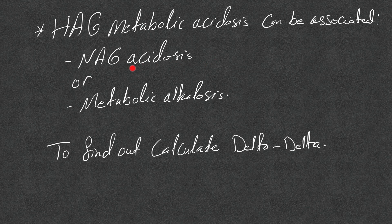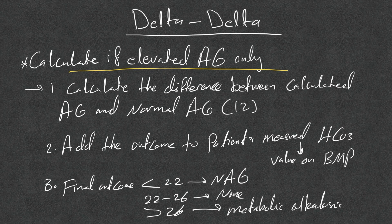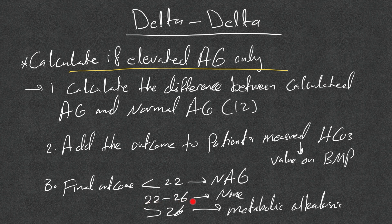High anion gap metabolic acidosis can be associated with normal anion gap acidosis or metabolic alkalosis. To find out, we calculate the delta-delta — calculated only when there is an elevated anion gap. Take the difference between the calculated anion gap and normal (12), then add that to the patient's measured bicarb from BMP. If the result is less than 22: associated normal anion gap acidosis. Between 22–26: no other disorder. Above 26: associated metabolic alkalosis.